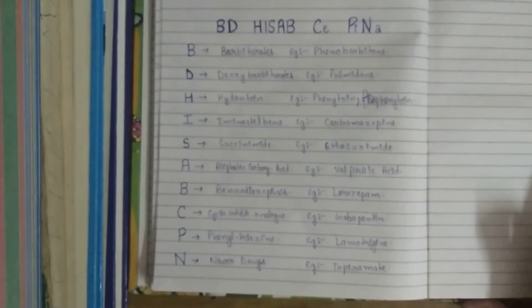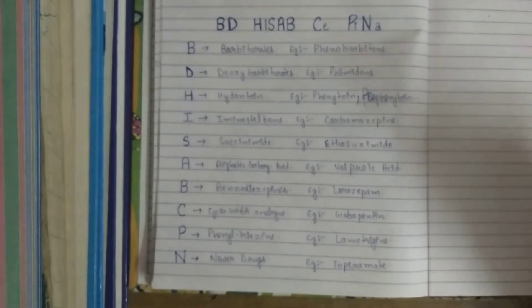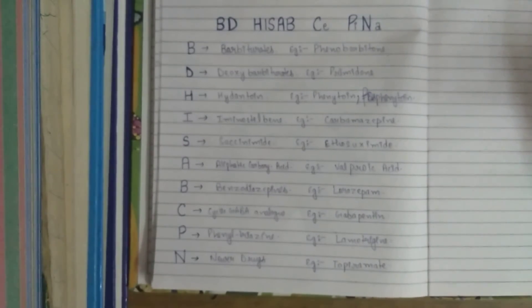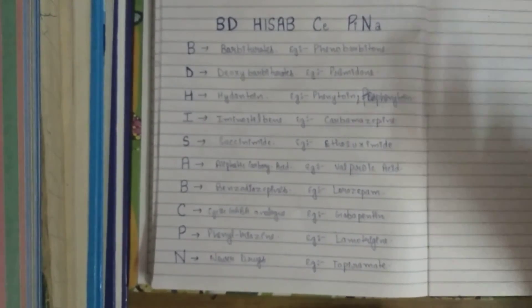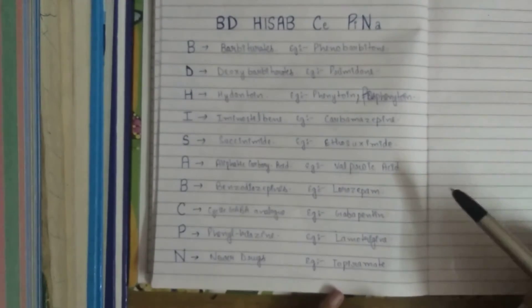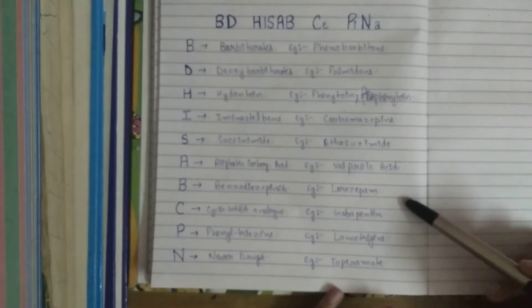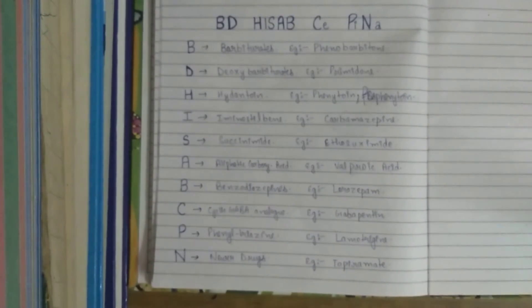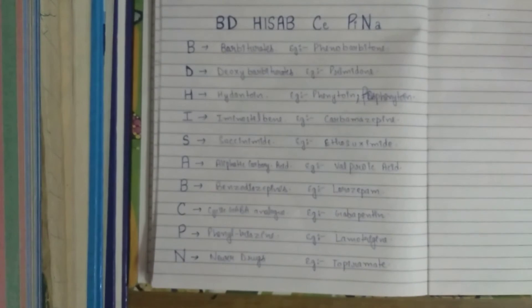Another important point is for valproic acid. Valproic acid is the first-line treatment for petit mal epilepsy, also known as minor epilepsy. The next point is for lorazepam. Lorazepam is the drug of choice for the treatment of status epilepticus, which is an emergency condition for seizures.